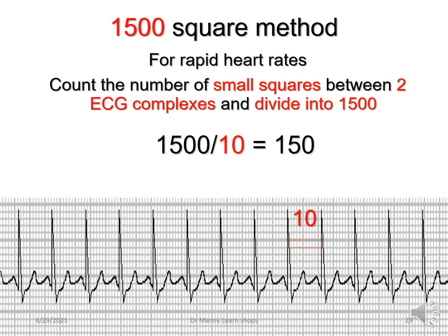You can also use the 1500-square method, which is used for very rapid heart rates. You count the number of small squares between two cardiac cycles or ECG complexes and divide into 1500, because there are 1500 small squares in a one-minute rhythm strip. Counting 10 small squares between two ECG complexes — 1500 divided by 10 is 150 — so the heart rate is approximately 150 beats per minute. That's the 1500-square method.